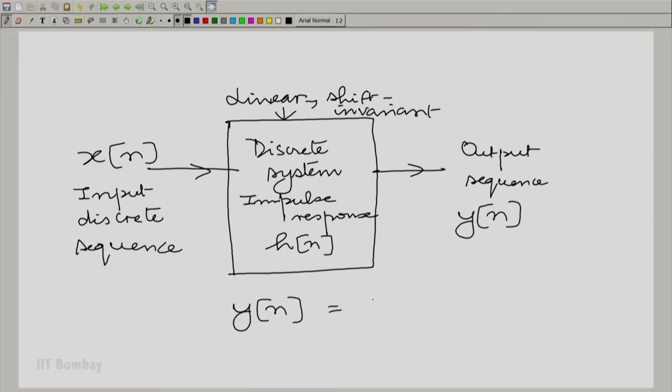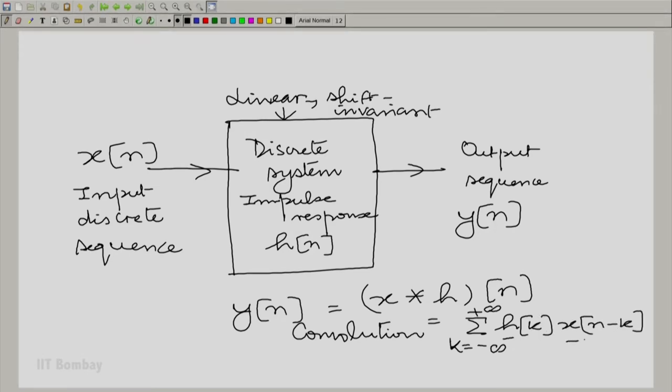y n is related to x n through convolution with h n and you know the expression for convolution. You could interchange the role of h and x; you already know all those properties of convolution.